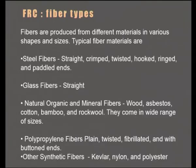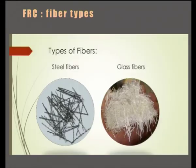The fiber types include: steel fibers, which can be straight, twisted, or hooked — the most common used; glass fibers, which are generally straight; natural organic and mineral fibers such as wood, cotton, bamboo, and rock wool; polypropylene fibers in plain, twisted, and fibrillated types; and synthetic fibers such as Kevlar, nylon, and polyester. You can see hooked-type steel fibers and straight glass fibers as typical examples.